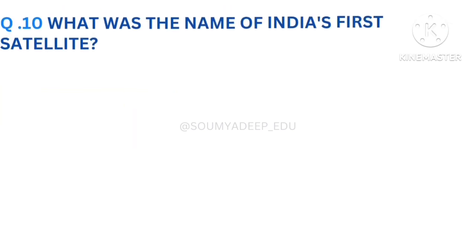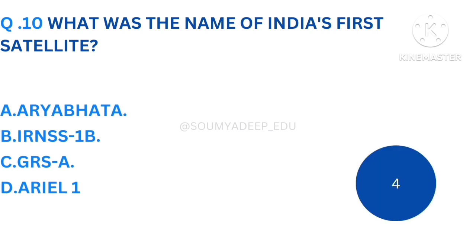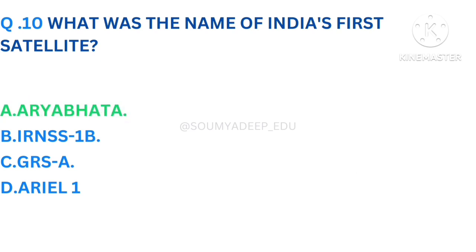What was the name of India's first satellite? The options are Arya Bhatta, IRN NSS-1B, GRSA ADL1. Your time starts now. The answer is Arya Bhatta. Let's move to the next question.